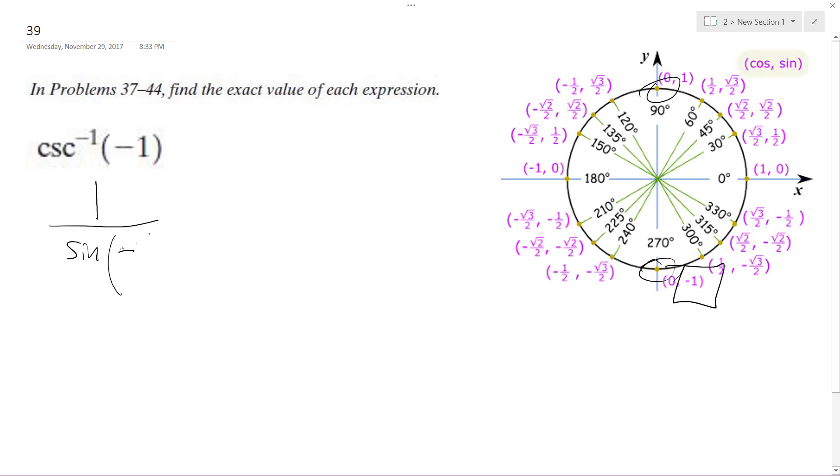It's only negative there at pi over 2. So the pi over 2 is equal to negative 1 over 1.